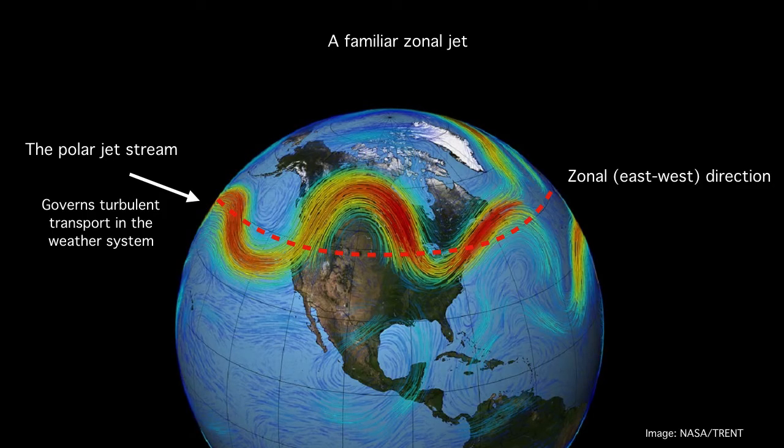Zonal jets are mean flows that align themselves along the east-west direction in planetary atmospheres. They're found more generally in many rotating flows but their presence alongside turbulence means that there are implications to the transport of scalars and momenta and that's why they're interesting from a modeling perspective.